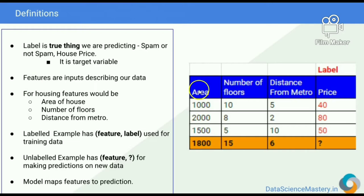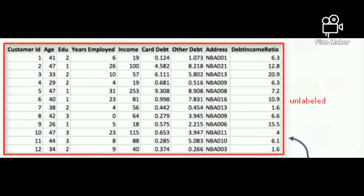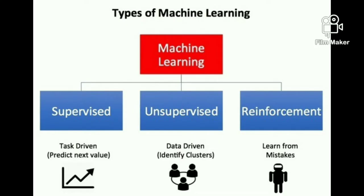In machine learning there are two kinds of data: labeled data and unlabeled data. Labeled data has both input and output parameters in a machine-readable pattern, but requires a lot of human labor to label. Unlabeled data only has one or none of the parameters in machine-readable form, which negates the need for human labor but requires more complex solutions.